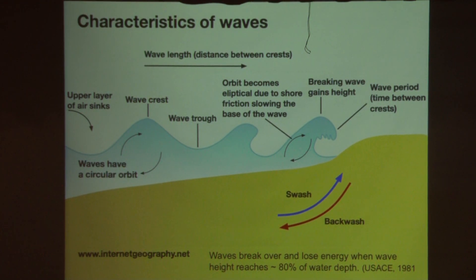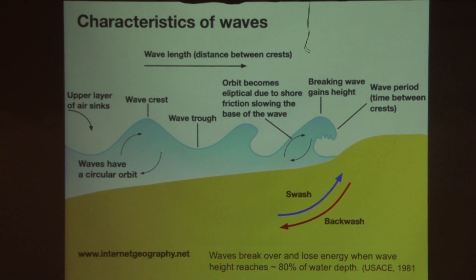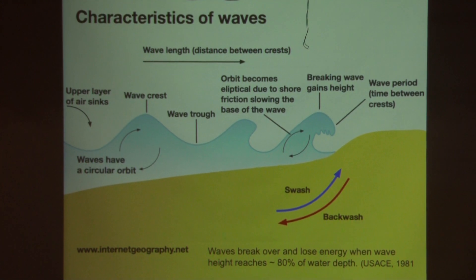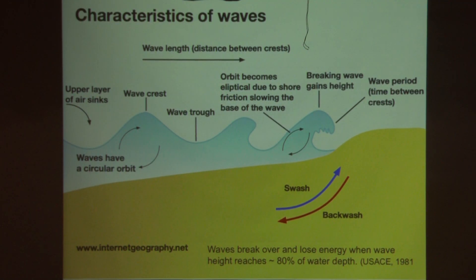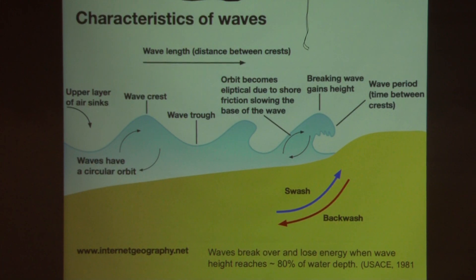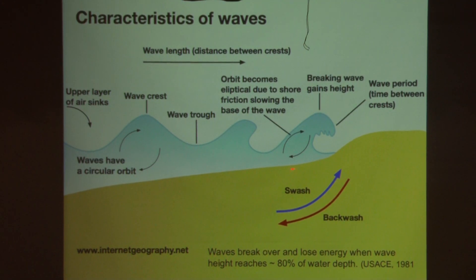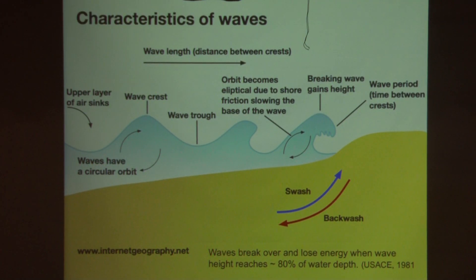Waves are not a transfer of water — waves are actually a transfer of energy. You might see this if you're at the beach on a raft; waves come back and forth and you don't automatically get carried into the shore, you kind of bob up and down, because these waves are transferring energy toward the lakeshore. As waves move they have a circular orbit, and as they get closer to the shoreline, when wave height reaches approximately 80% of the water depth, that wave starts to feel the friction of the lake bed. It slows down and starts to rise up and break. Where that wave breaks and crests is critical, because that orbital force hitting the lakeshore is typically what really causes erosion.